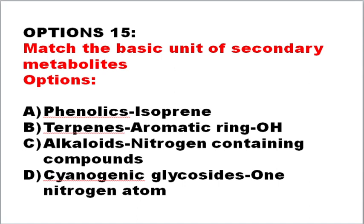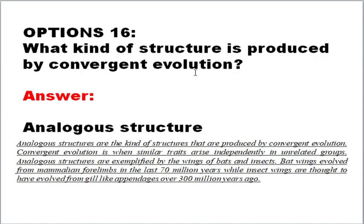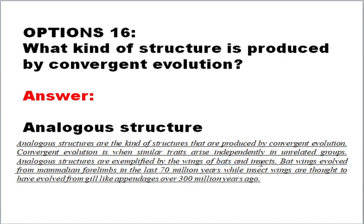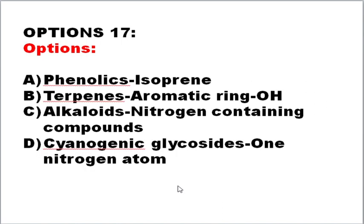The next question: what kind of structure is produced by convergent evolution? The correct answer is analogous structures. There are two types of evolution: convergent and divergent. Convergent evolution gives rise to analogous structures — similar traits that arise independently in unrelated groups. For example, wings of bats and wings of insects: bats belong to mammals while insects are completely different. Bat wings evolved from a mammalian forelimb over the last 70 million years, whereas insect wings evolved from gill-like appendages from fish over 300 million years.